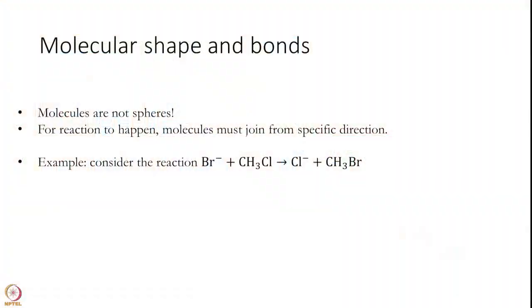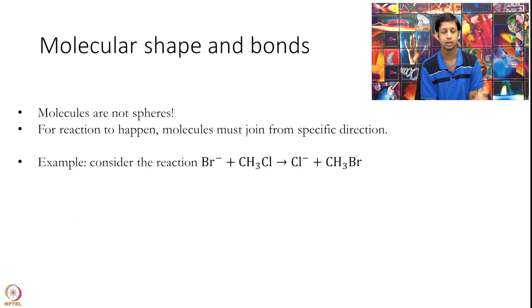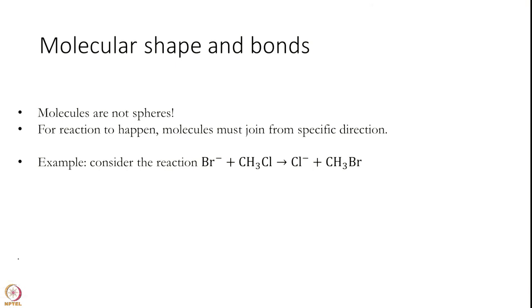The next thing I want to point out once more to re-emphasize - there is no notion of molecular shapes or bonds in collision theory. Let's look at a simple example like an SN2 reaction. Pardon me for my bad drawing skills. This reaction essentially happens as Br minus attacks the carbon opposite to chlorine, and this chlorine dissociates to give essentially an inverted structure.